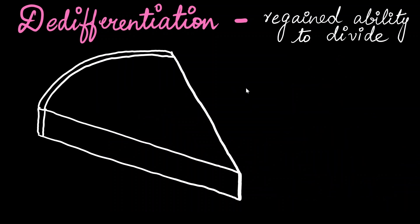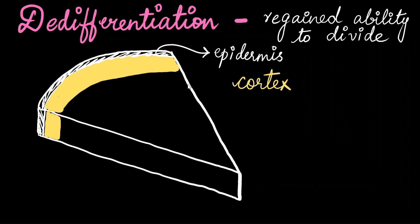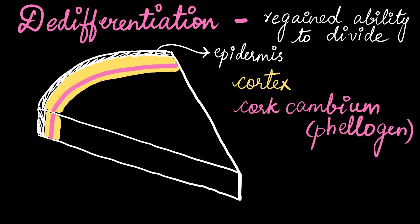Similarly, if you look towards the edge, we have the epidermis and the cortex. The parenchyma cells which are present near the cortex undergo de-differentiation to form cork cambium or phellogen.